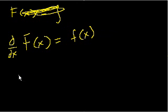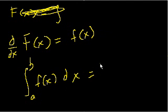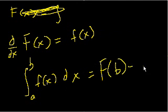So the derivative of big F is this small f. And all we're saying is that if we take the integral of small f of x from a to b dx, that this is big F, its antiderivative, at b, minus the antiderivative at a.